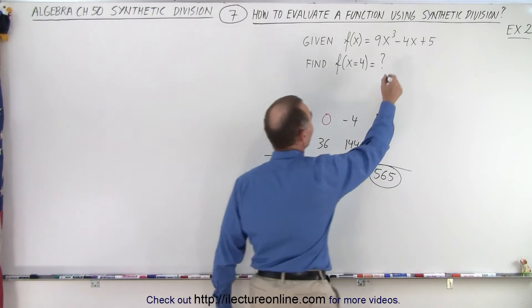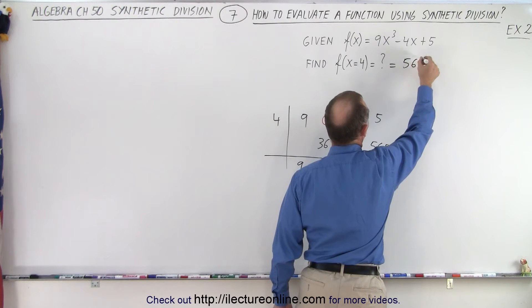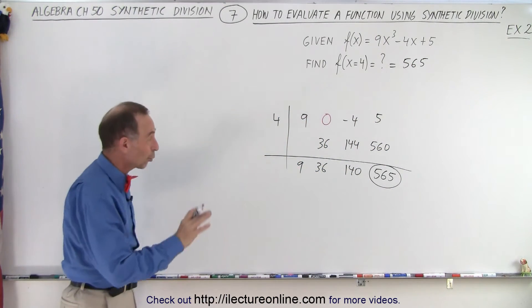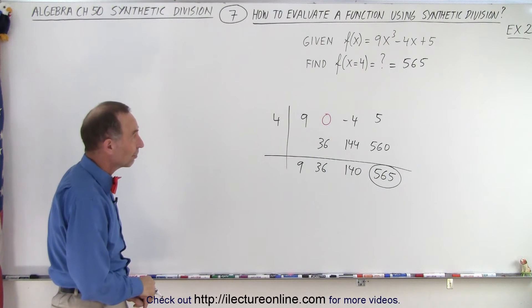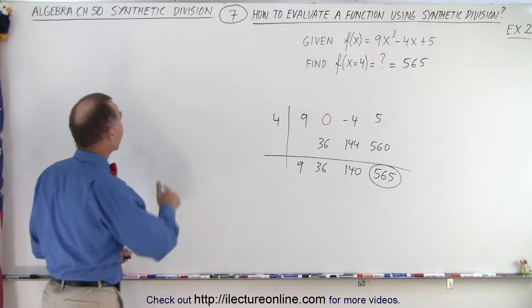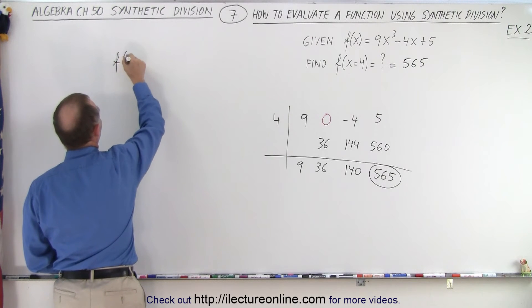And that's the function evaluated when x equals 4. So we can say that this is equal to 565. So you see, even with big numbers, it's a quick process using that synthetic division methodology.